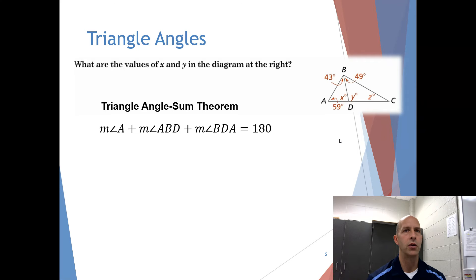So that tells me that the measure of angle A plus the measure of angle ABD plus the measure of angle BDA equals 180. This is the triangle on the left. If we add up those three angles, they have to add up to 180.